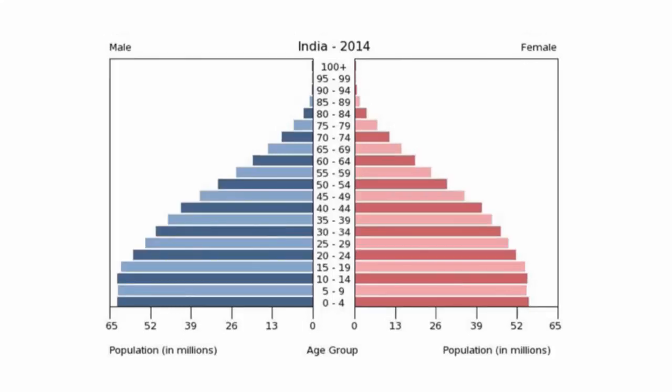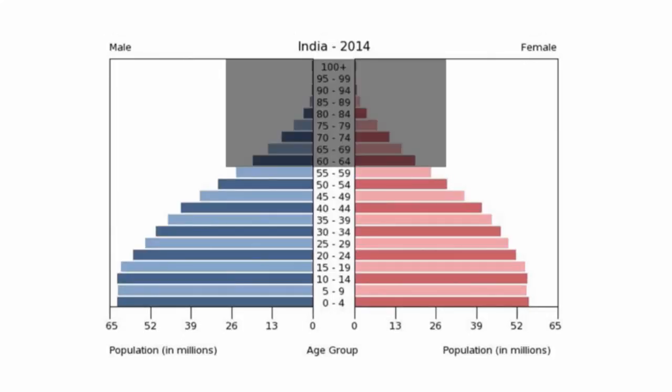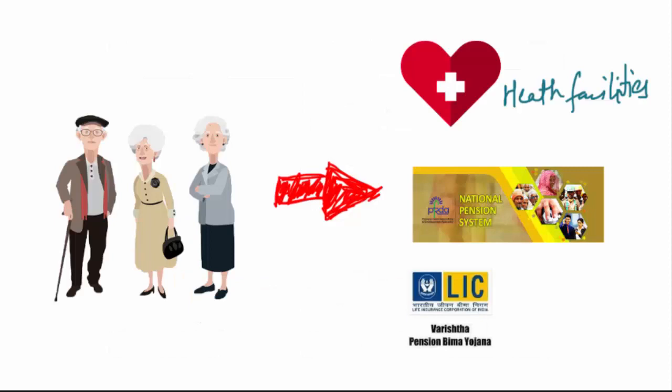Now look at the age group of people above 59 years. These are the older populations. This group will require more expenditure on healthcare facilities, pensions, and all other care and welfare.